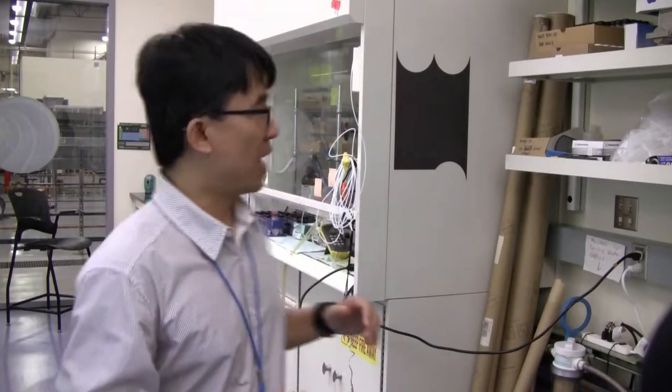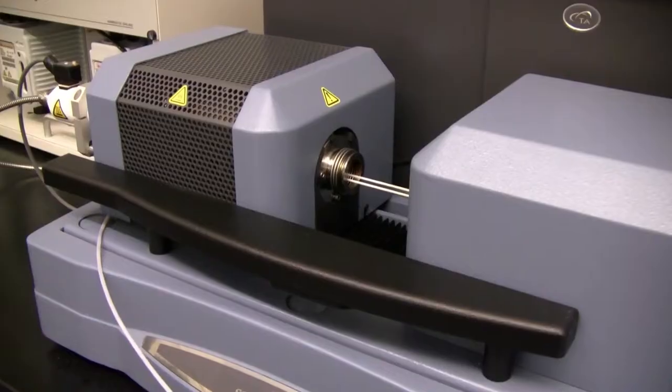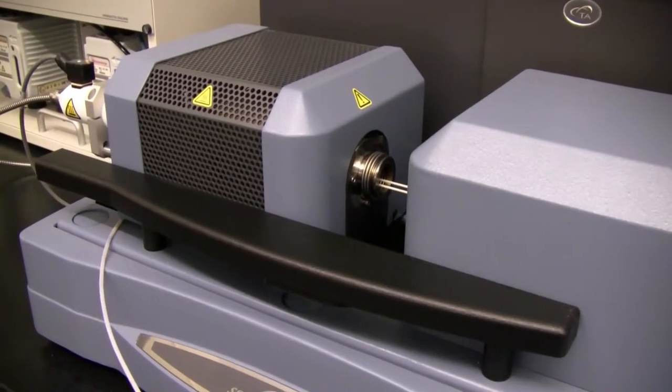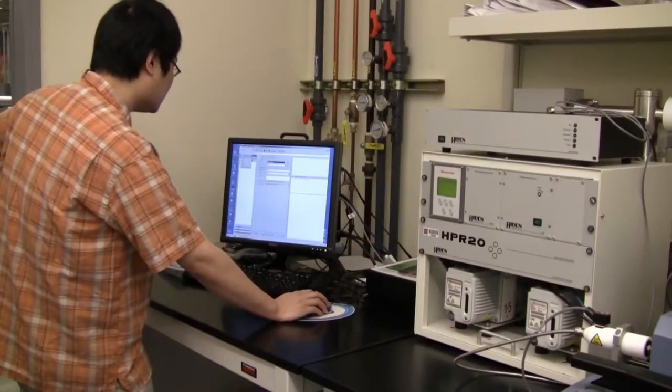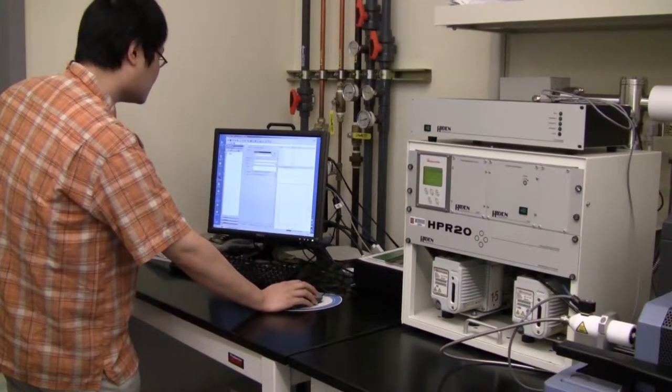We have another tool, the TGA coupled with a mass spec. Essentially you can look at a thin film conversion process or nanomaterial conversion process. You can look at what molecules are coming out of your film.